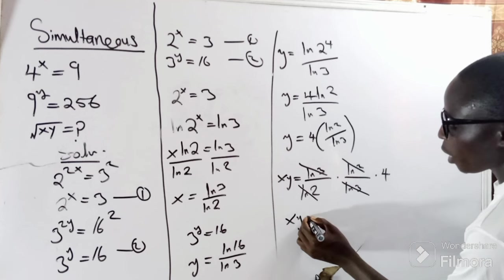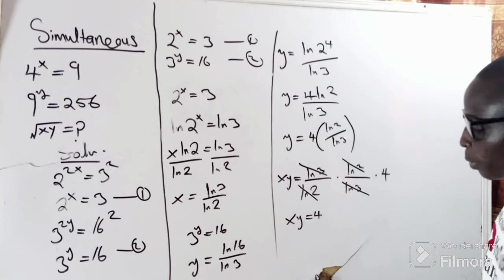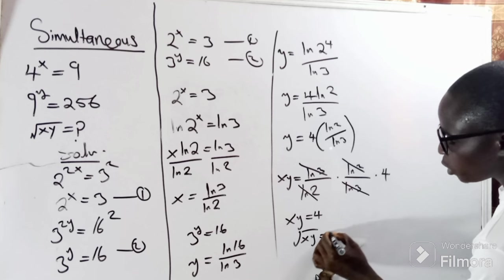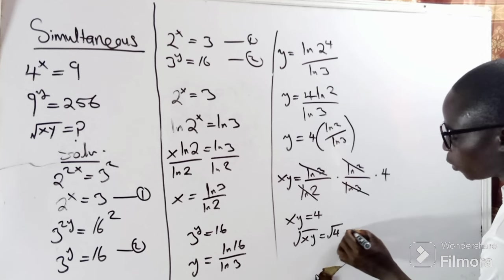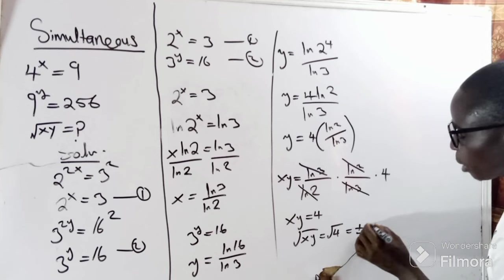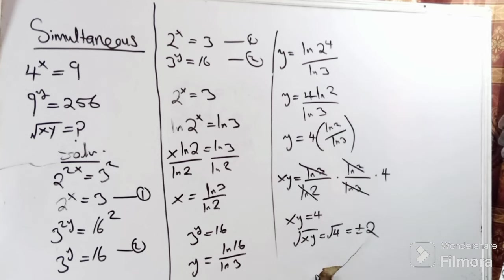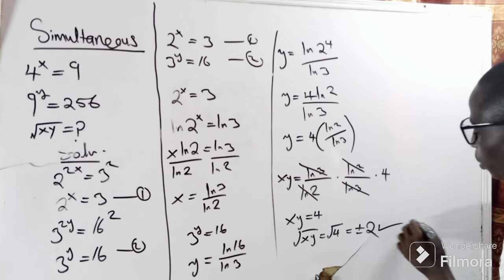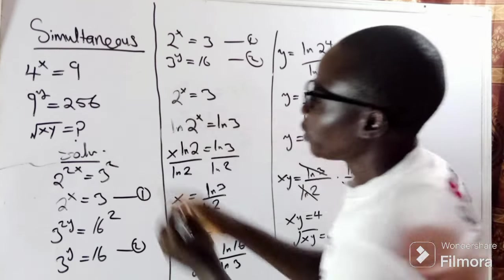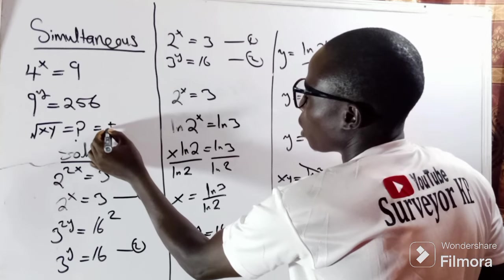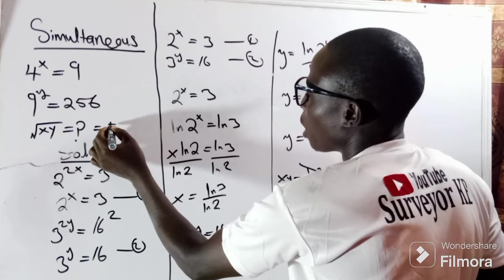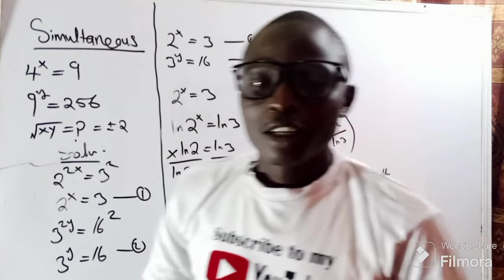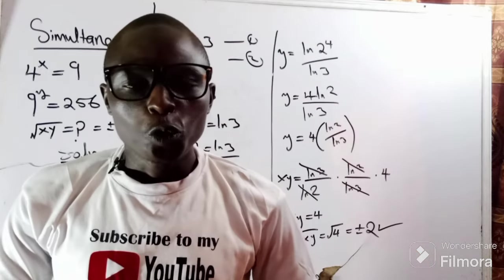The square root of the product xy is the square root of 4, which equals plus or minus 2. So the answer is plus or minus 2.